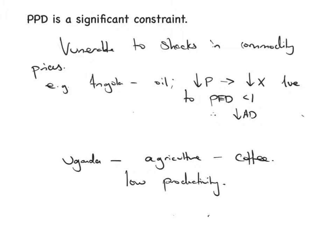The main problem with the first point is that there is so much to say about the problems of primary product dependency. The first point to note is that if a country is only making one good, it's very vulnerable to shocks in the price of that commodity. If the price falls — and many of these commodities have very inelastic PED — then the country loses a significant amount of revenue, far more than it gains. This can be analysed in terms of a change to aggregate demand.